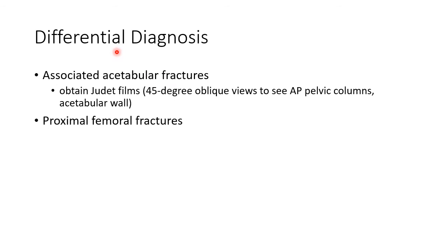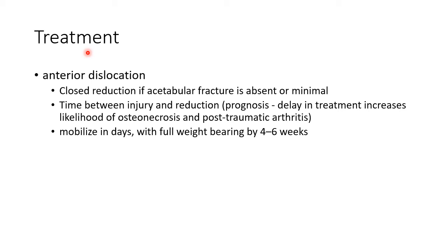We have to rule out associated acetabular fractures. This can be done by obtaining Judet films, which are 45-degree oblique views to see the AP pelvic columns and acetabular wall. Proximal femoral fractures should also be ruled out in cases of hip dislocation.